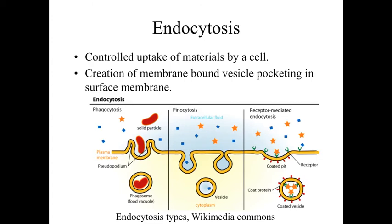Endocytosis is essentially the opposite — the controlled intake of materials from outside of the cell into the cell. Instead of a membrane-bound structure inside the cell fusing and dumping materials out, the external plasma membrane engulfs some material, surrounds it, pinches it off into a membrane-bound vesicle, and brings it into the cell. Depending upon the volume of material, we can do phagocytosis, which is the movement of larger solid material, or pinocytosis, which is essentially engulfing smaller materials dissolved within the extracellular fluid.